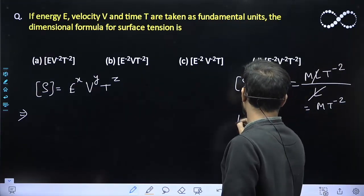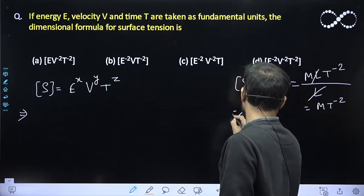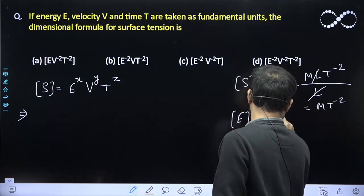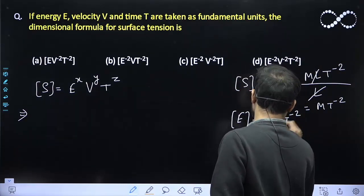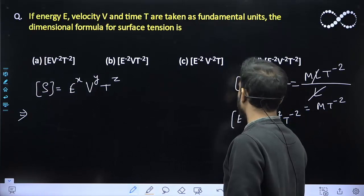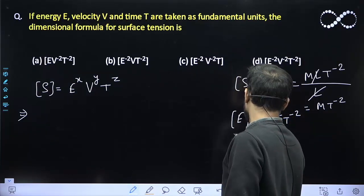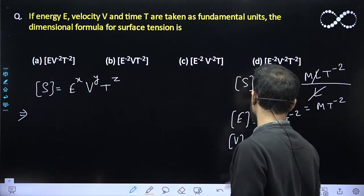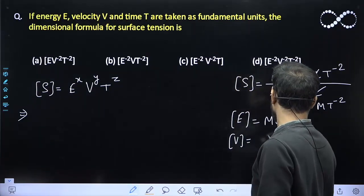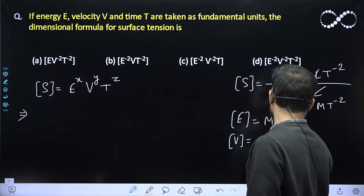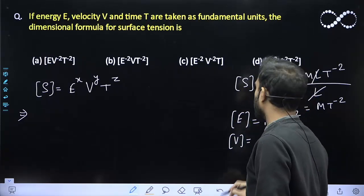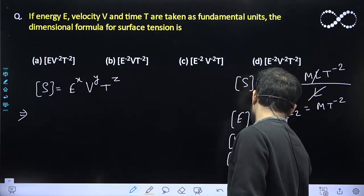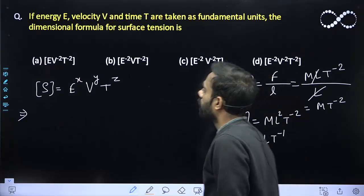Now, the dimension of energy, as you all know, is ML² T raised to power minus 2. The dimension of velocity is meter per second, so LT raised to power minus 1. The dimension of time is simply T.